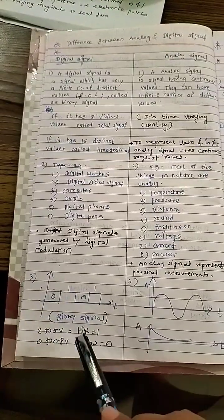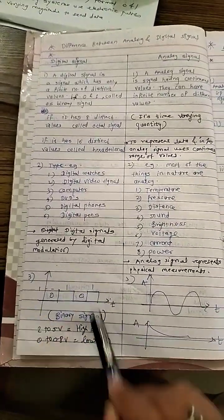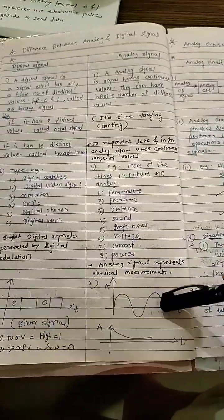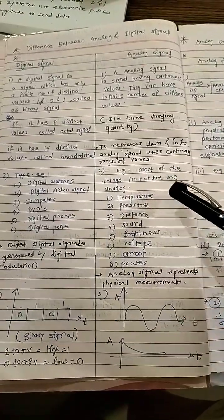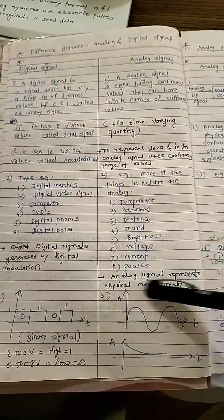It has only distinct values, 0 and 1: high means 1, low means 0, represented like this. Analog signals represent physical measurements like temperature, pressure, distance, sound, current, and power, so it is prone to noise.